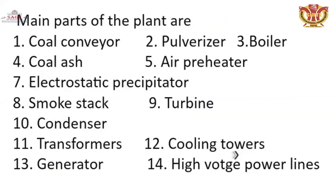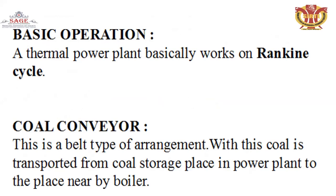The main parts of a thermal or steam power plant are: first the coal conveyor, second the pulverizer, third the boiler, fourth the coal air, fifth the air preheater, sixth the superheater, seventh the electrostatic precipitator, eighth the smokestack, ninth the turbine, tenth the condenser, eleventh the transformer, twelfth the cooling tower, thirteenth the generator, and fourteenth the high voltage power line.